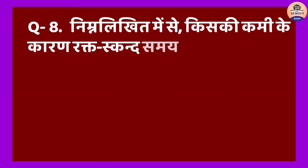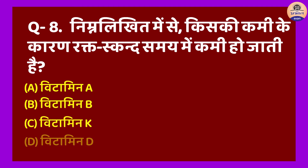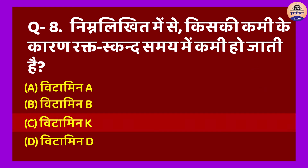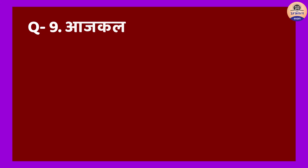Question No. 8: Nimnlikhit mein se kiski kami ke karan rakt skand samay mein kami ho jaati hai? A. Vitamin A, B. Vitamin B, C. Vitamin K, D. Vitamin D. Sahi jawab hoga Option C. Vitamin K ki kami se rakt skand mein kami ho jaati hai. Iska rasaynik naam Phyllokinone hai. Iska strot tamatar aur hari sabziyan hain.